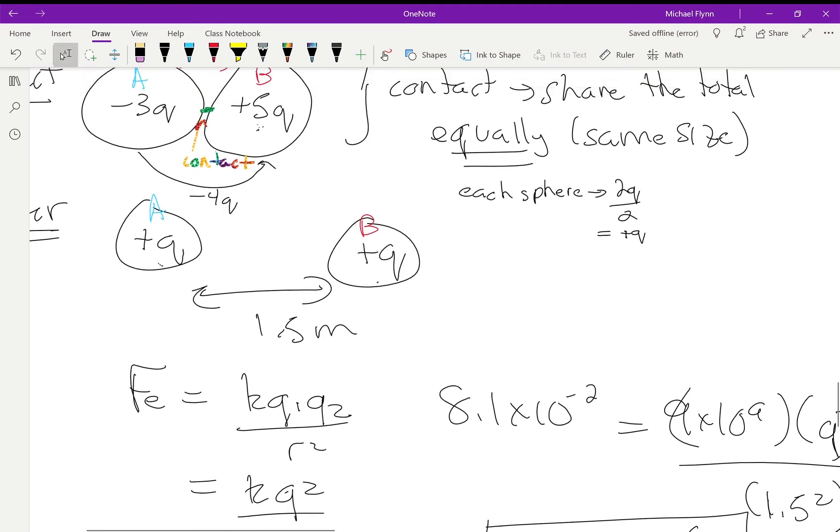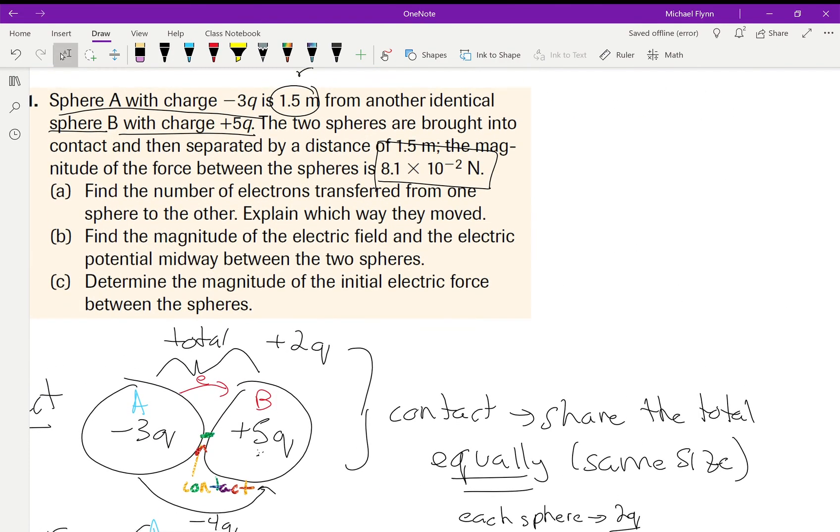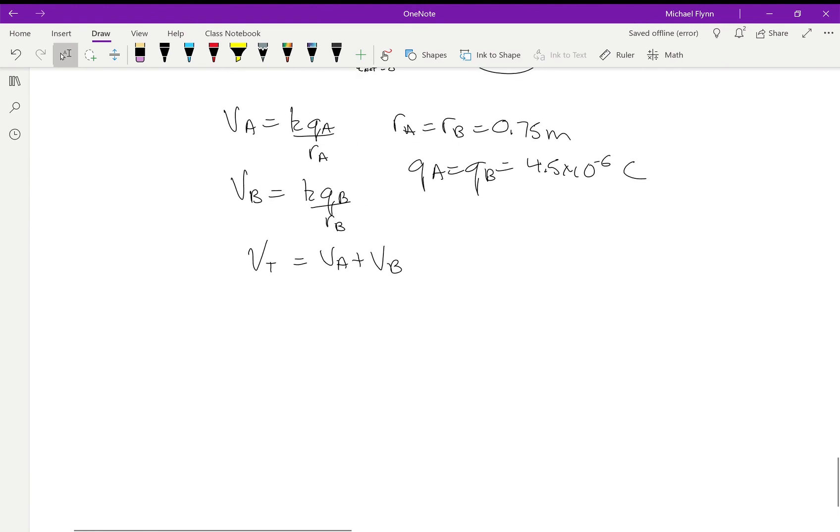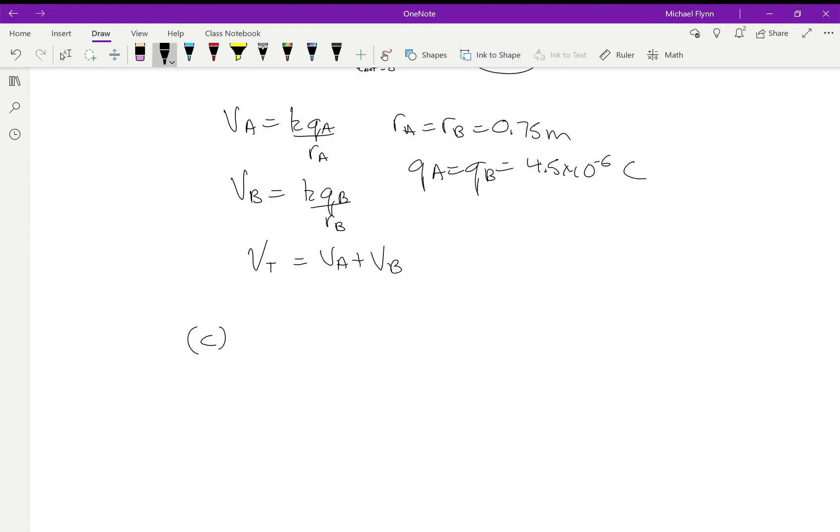Now there was a question C, I believe: determine the magnitude of the initial electric force between the spheres. All right, well here's where we figured out what q was, right? 4.5 times 10 to the negative 6. So in question C, you're going to go: the initial electric force would be k q_A times q_B over r squared.